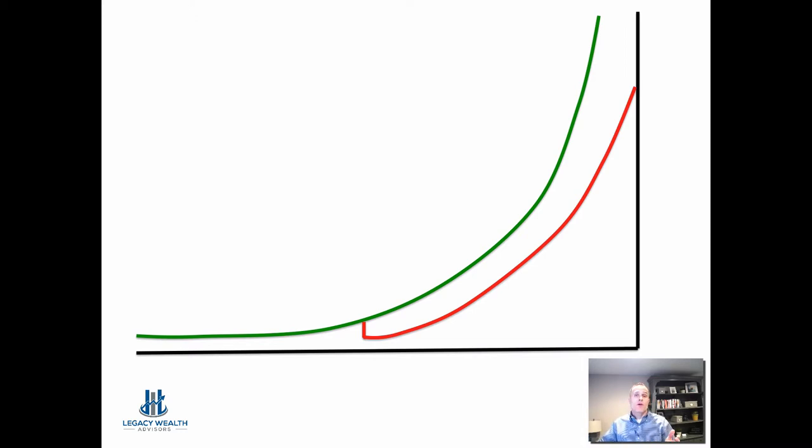Typically what will happen over a period of business life or just life in general is people will tap into their accumulation vehicles several times. When they originally set out to start saving, they think they're going to have a certain amount when in actuality, in the end, they have a much lower amount due to this idea of only being able to do one or the other.